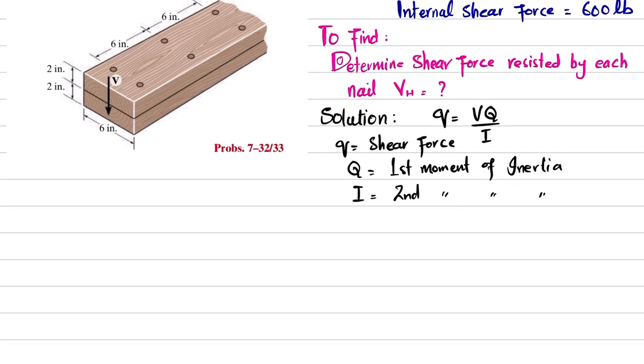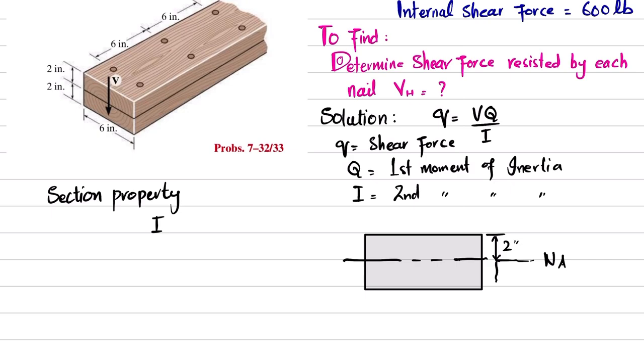I is a section property, so we will first find the section property. We can see these are the two boards that are bound together. This is its neutral axis. This distance is given as two inches, and this distance is also two inches.